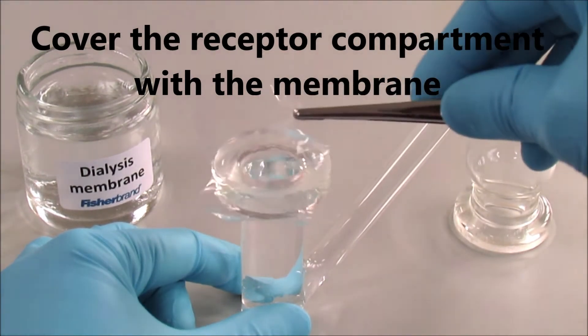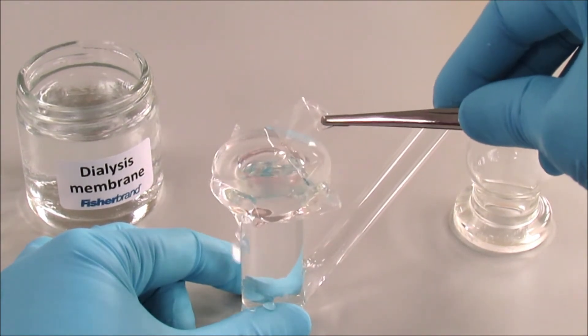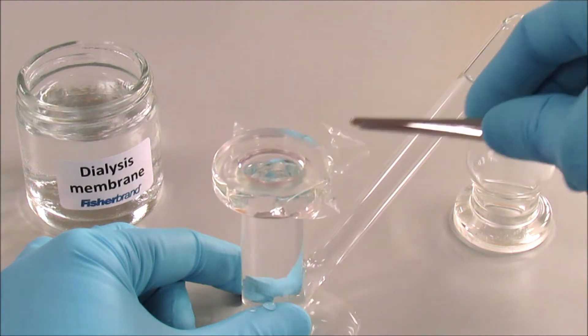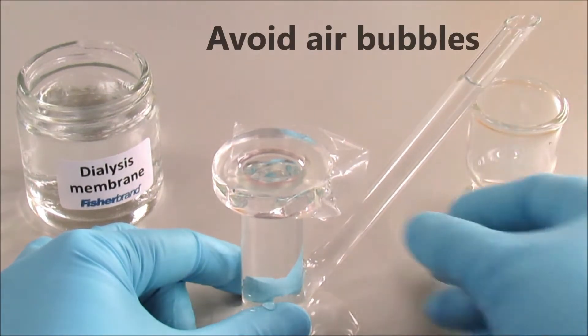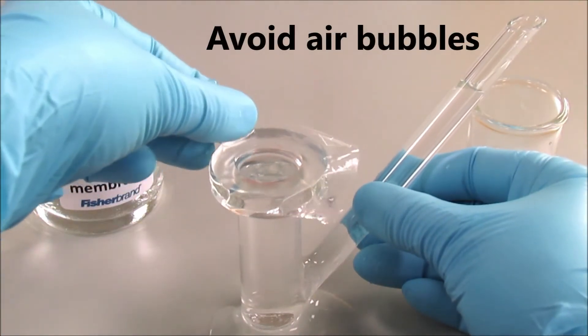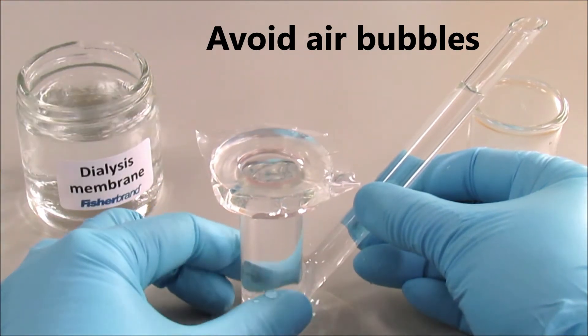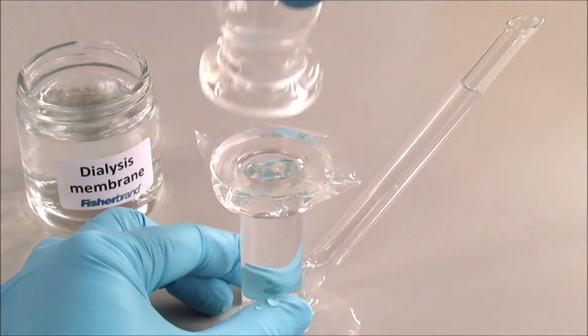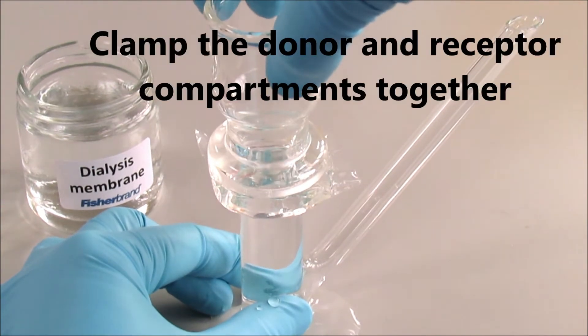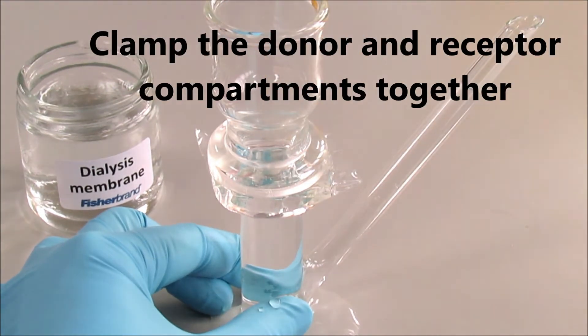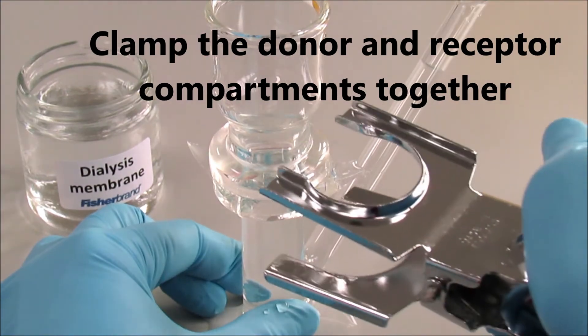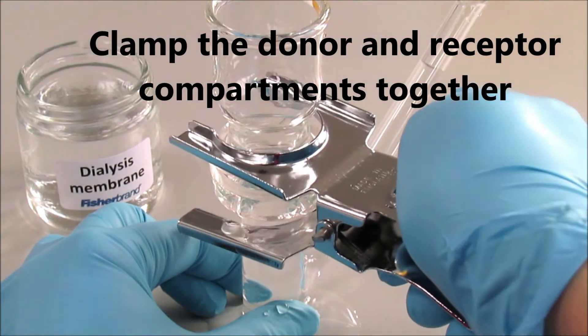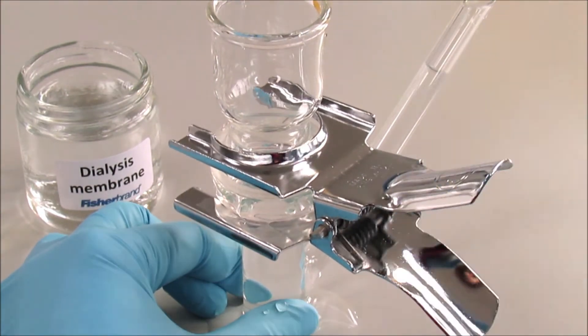We need to ensure that air bubbles are not trapped underneath the membrane. Then we place the donor compartment on top and clamp them together. These two compartments should be perfectly aligned.